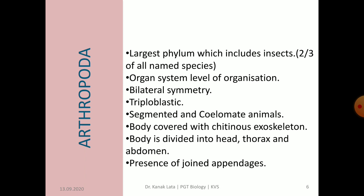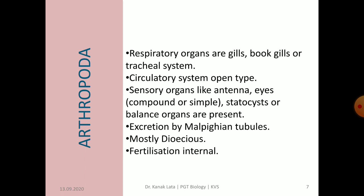The body wall consists of a thick chitinous cuticle and a single-layered epidermis. Body is divided into head, thorax and abdomen. In case of Arthropoda, the appendages are jointed — this is one of the very important characteristic features of arthropods. Respiration may occur through gills, book lungs, book gills or through a tracheal system. The tracheal system carries oxygen directly to the cells.